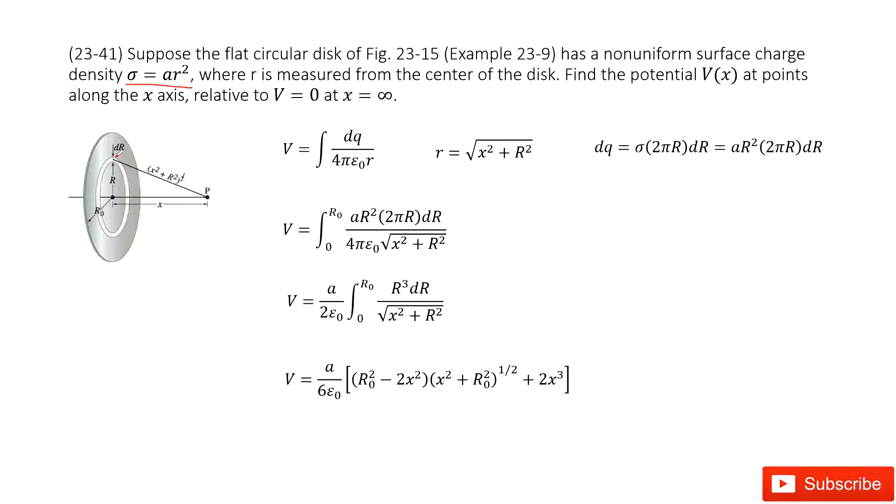So now we can see that we can write the potential at the position P as the charge dq for this circle divided by 4πε₀r. The r is distance from this charge to the location P.